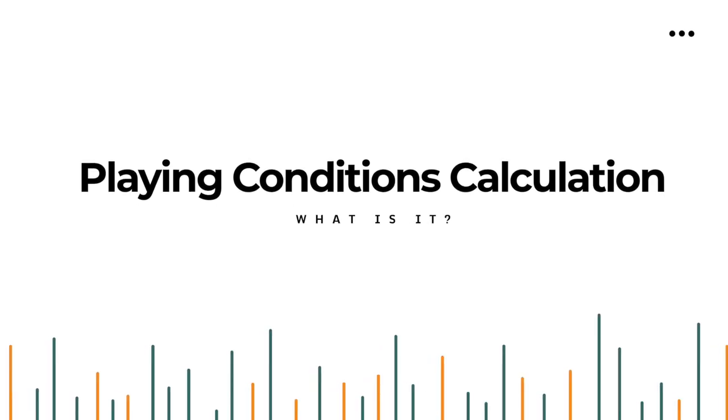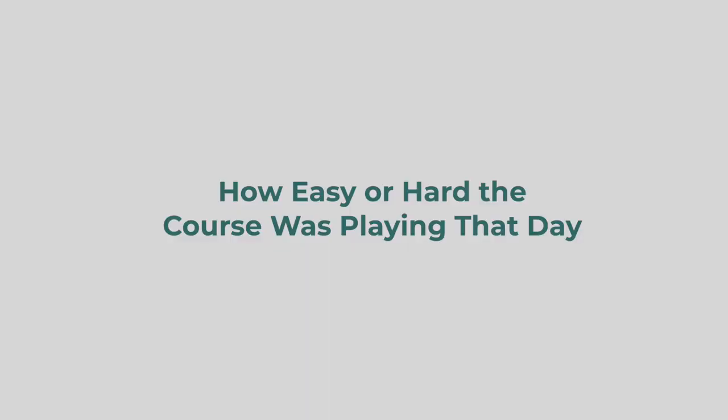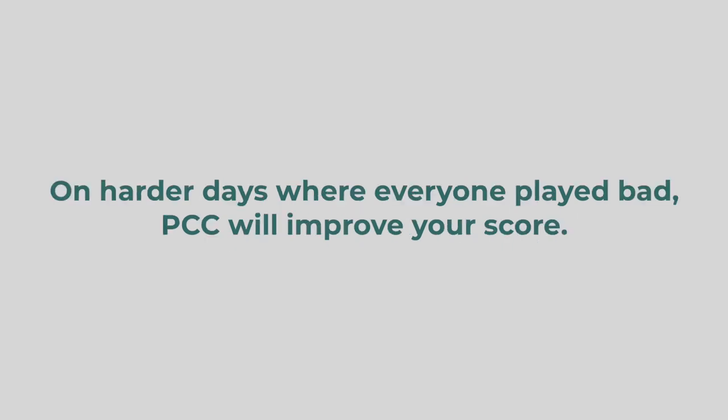We've covered course rating, slope rating, and adjusted gross score. Now we need to figure out what the PCC adjustment is about. PCC stands for Playing Conditions Calculation — it's a determination of how hard the course played on the particular day you played it. For instance, if you had extreme weather like strong wind, very wet conditions, super long rough, ridiculously fast and firm greens, or other exceptionally tough playing conditions, and enough people played the course poorer than normal that day, this could positively impact your score.